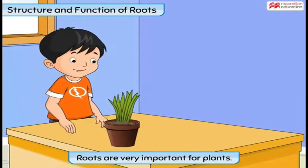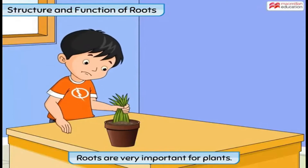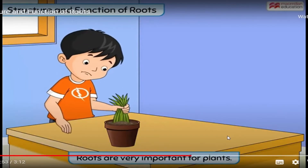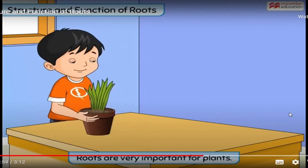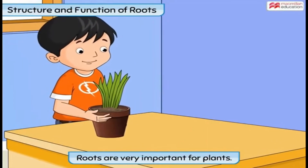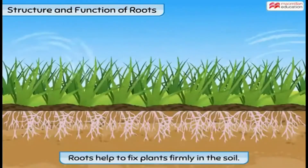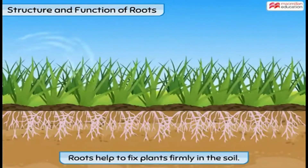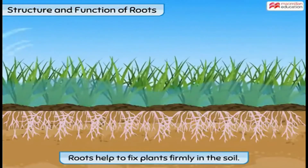Roots are a very important part for plants. Look at this boy trying to pull out a bunch of grass from the soil. He tries to pull the grass, but the plants do not come out easily, and the boy ends up lifting the pot. This shows that roots of the grass plants are holding them firmly in the soil. Thus, roots function to prevent the plants from being uprooted by fast wind and flowing water.